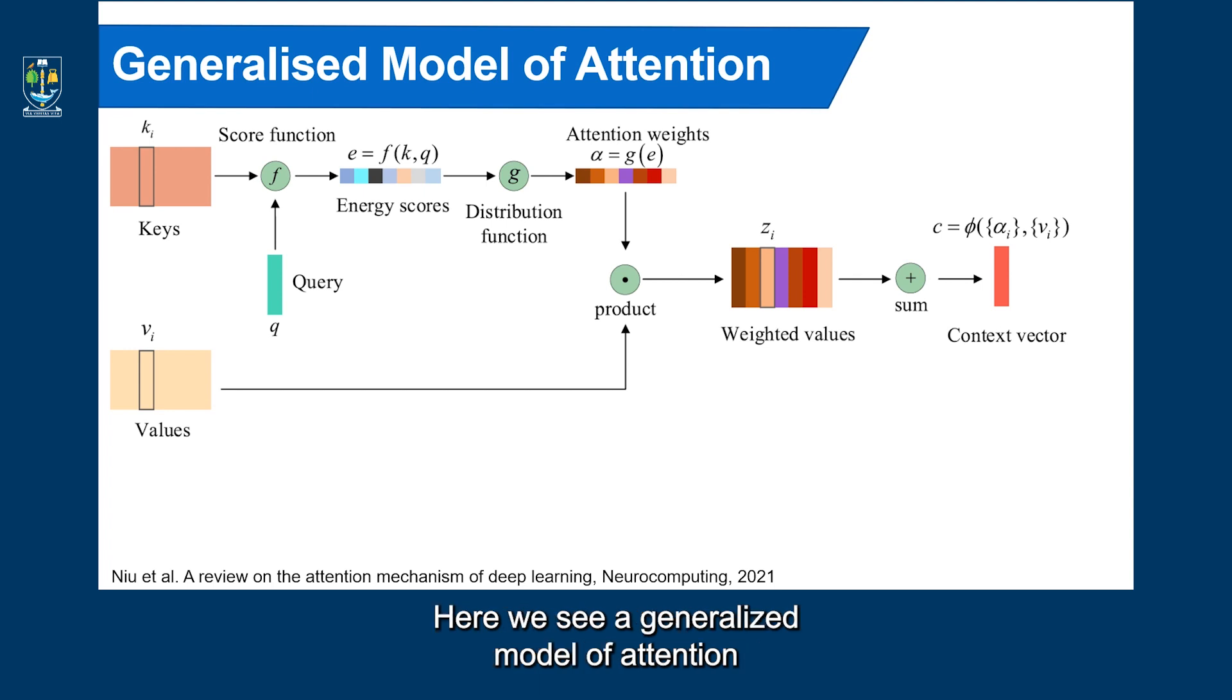Here we see a generalized model of attention based on a recent review article. In attention network, we first encode the source data features as K, also called keys. Keys can be expressed in various representation according specific tasks and neural architectures. Keys here represent different areas of an image, word embedding, or as we saw in our previous recurrent neural network example, they represent hidden states of the network.